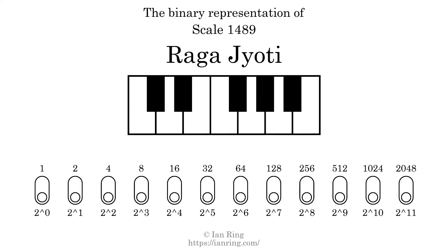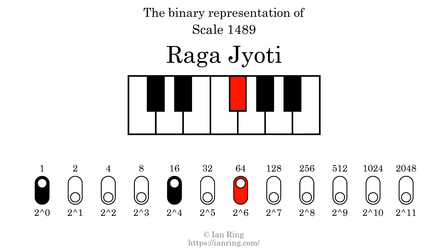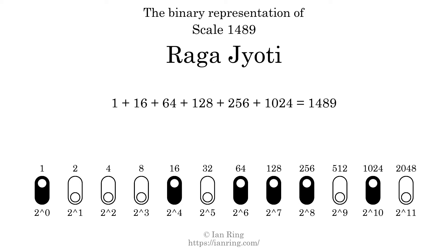The binary representation of this scale is determined by mapping tones of the scale to binary digits. Each binary digit represents a power of 2. To get the scale number, we add the powers of 2 together. The powers of 2 that are present in the scale, all added together, equals 1489.